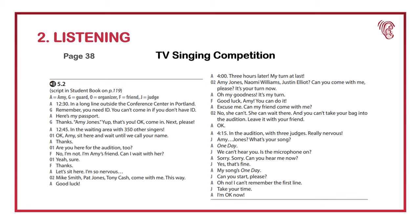On this slide, we look at the script for track 5.2. We have A for Amy, G for guard, O for organizer, F for friend, and J for judge. At 12:30, there's a long line outside the conference center in Portland. A line is a group of people arranged in a row, waiting for their turn to get in. The guard says, 'Remember, you need ID. You can't come in if you don't have ID.' ID is an abbreviation for identification — it can be an ID card or a passport. Amy says, 'Here is my passport.' The guard replies, 'Thanks, Amy Jones. Yeah, that's you. Okay, come in. Next, please.'